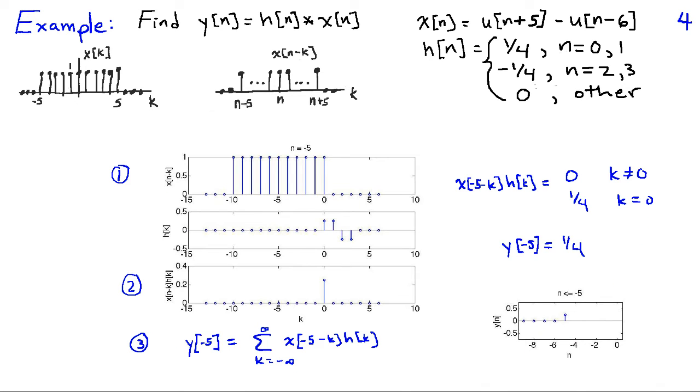So let's move to n equals minus 5. In that case, the leading edge of x of n minus k overlaps with the value at k equals 0 of h of k. And the product, therefore, is 1 fourth at k equals 0 and it's 0 elsewhere. And so if I add up all the values in the sequence, I simply get 1 fourth. So y of minus 5 is equal to 1 fourth.